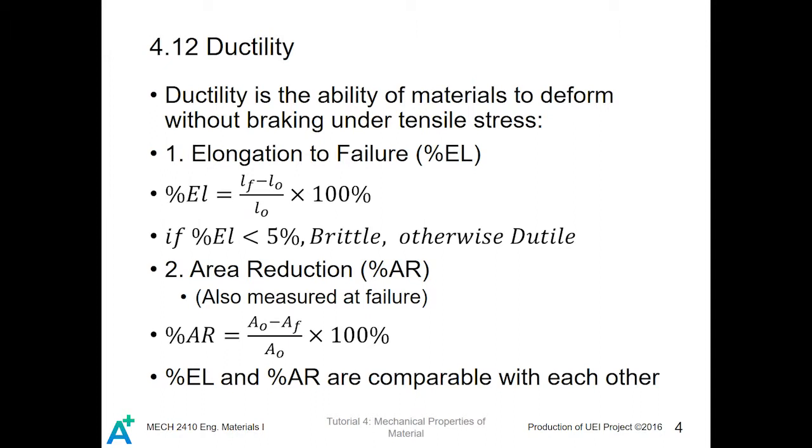Normally, if the percentage EL is more than 5%, we consider it as a ductile material, otherwise we consider it as a brittle material.